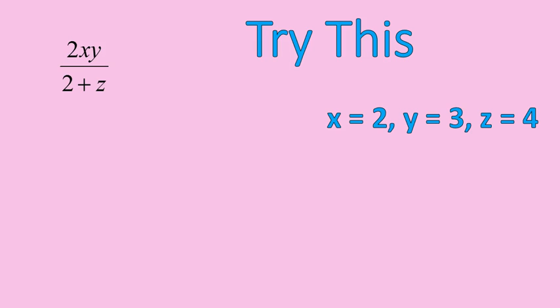All right. So I'm substituting x equals 2, y equals 3, z equals 4. And it becomes 2 times 2 times 3. 2 times x times y is 2 times 2 times 3. My z value in the bottom is the number 4. So I'm substituting the number 4 in there where we have that letter.